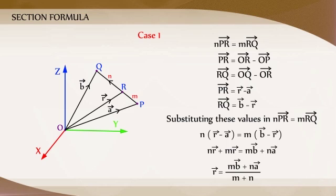That is, the position vector of the point R with respect to O — OR vector — is equal to M times B vector plus N times A vector divided by M plus N.